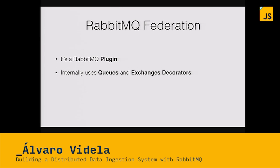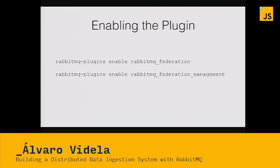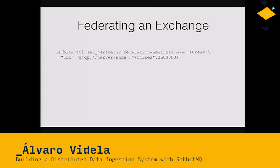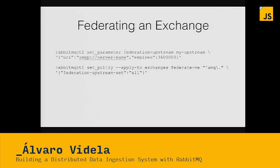You can configure Federation at runtime using parameters and policies. To federate something, you tell Rabbit to create a parameter of type 'federation-upstream' called 'my-upstream', then give it the URI of where to connect. Then you tell Rabbit: every exchange whose name matches — for example 'amq.*', which could be images, logs, whatever — that exchange will be federated and replicated. And that's it.